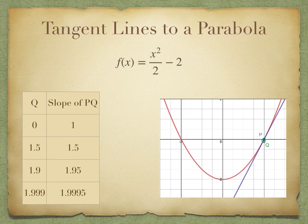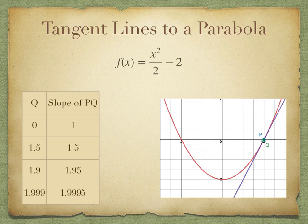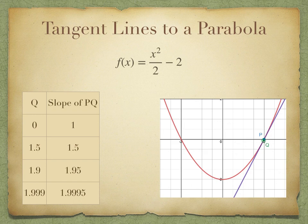This table shows the positions of q in terms of x value and the slope of pq. When x of q is 0, the slope is 1. When we move q closer to p at x = 1.5, the slope increases to 1.5. When x of q is 1.9, the slope increases to 1.95. Continuing to move q closer, at x = 1.999, the slope of pq increases to 1.9995. At this point I can estimate that the slope of the tangent line at p is 2, because 1.9995 rounds up to 2.